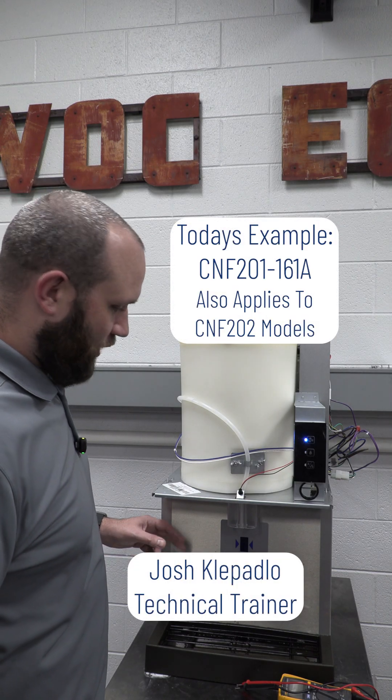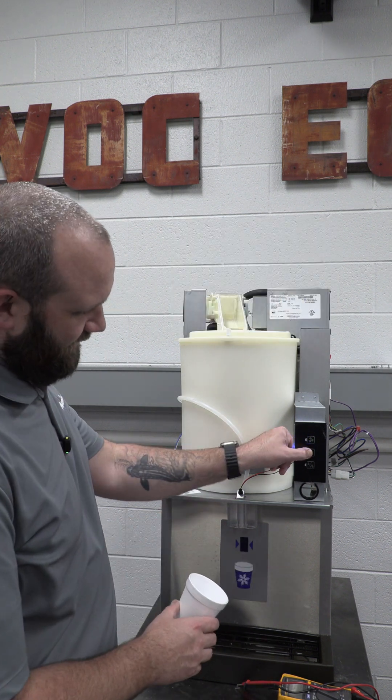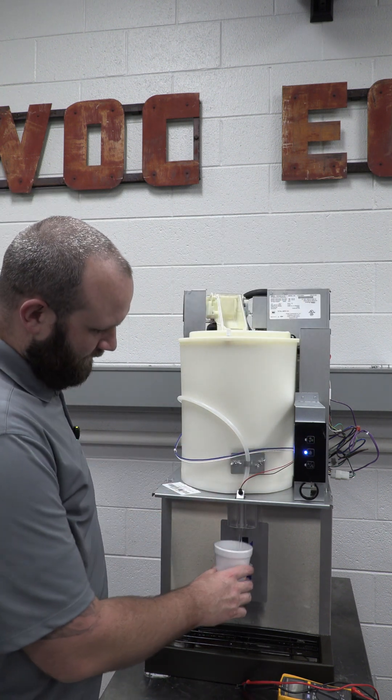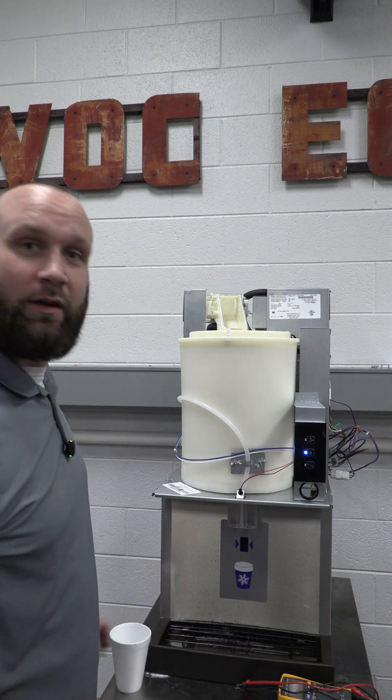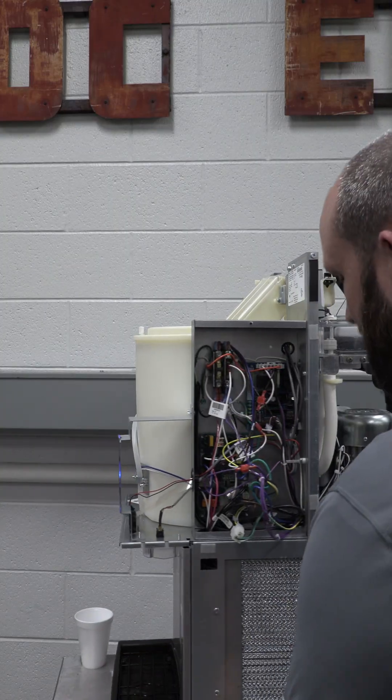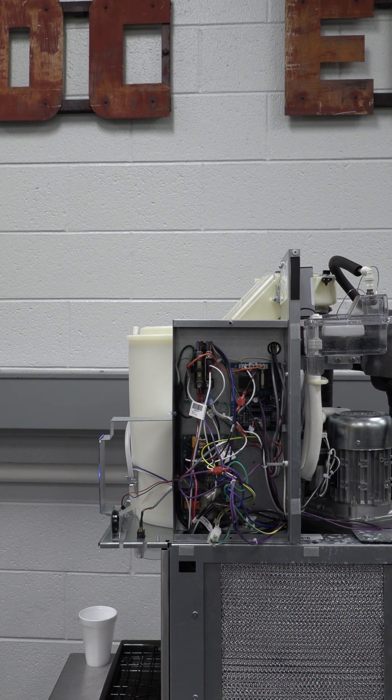Today we have a countertop nugget ice and water dispenser that will dispense water and would dispense ice if it had ice, but it will not run and make ice. Let's see if we can figure out why. I've already saved the time and taken off the panels to gain access to the electrical compartment.